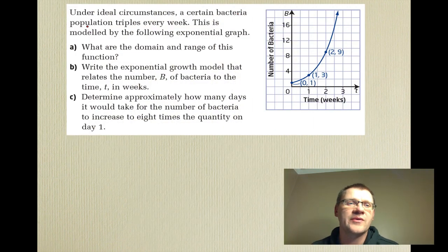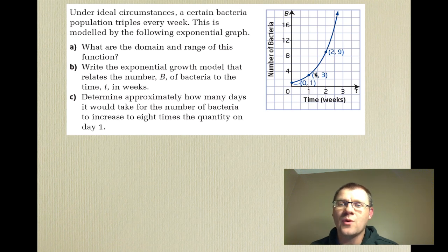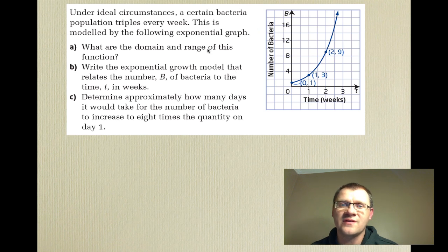Here's our final example. Under ideal circumstances, a certain bacteria population triples every week, modeled by an exponential graph. At time 0, there is 1 unit of bacteria — probably thousands or millions, but represented as 1. After one week there are three times as many, after two weeks nine times as many, after three weeks 27 times as many, and so on.